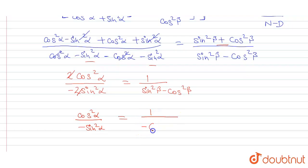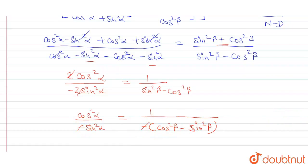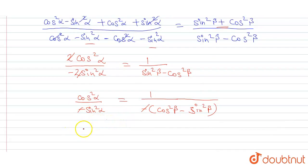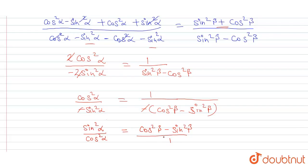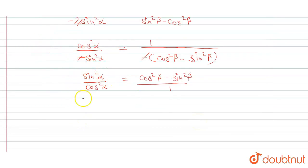Let us take minus common, giving minus cos squared alpha upon minus sin squared alpha equals minus cos squared beta plus sin squared beta, that is minus sin squared beta. The minus signs cancel out, and taking the inverse we get sin squared alpha upon cos squared alpha equals cos squared beta minus sin squared beta upon 1. Now sin squared alpha upon cos squared alpha is tan squared alpha, so tan squared alpha equals cos squared beta minus sin squared beta, which is exactly what we had to prove.